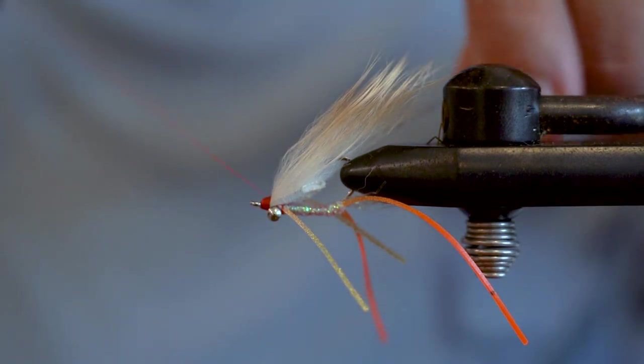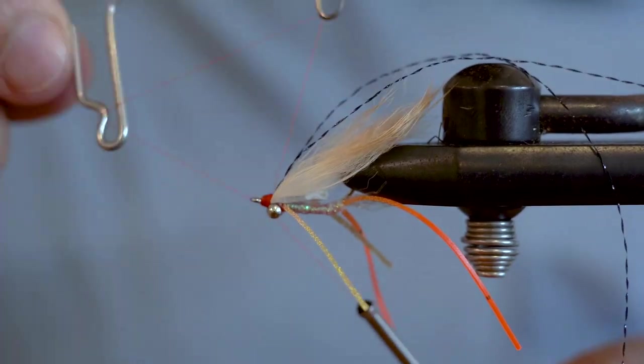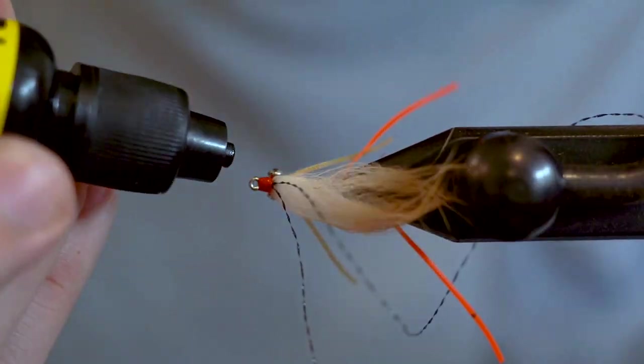Double your crystal flash around your thread and then pull it to the top of the hook. Now whip finish and then add a coating of UV adhesive to finish the head.